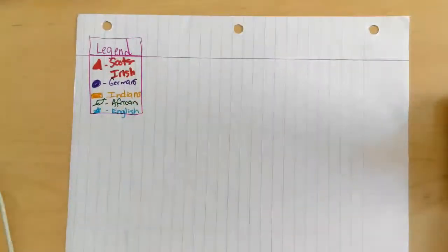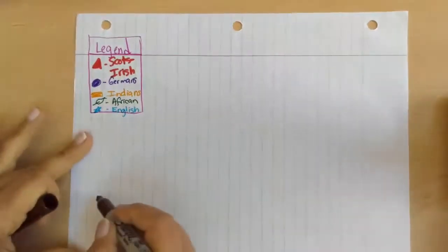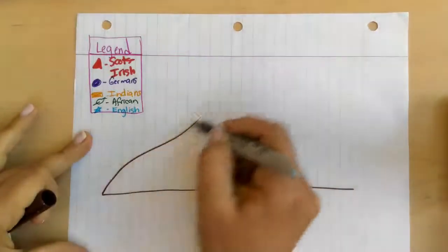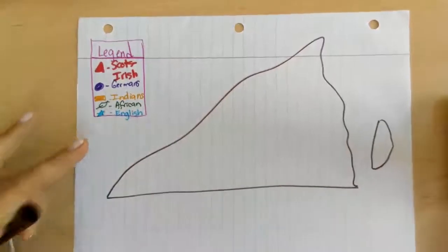All right, so after you have that legend or map key completed, you're gonna draw Virginia the very best way that you can. Remember, it's kind of like a sideways triangle and it includes the eastern shore out here.